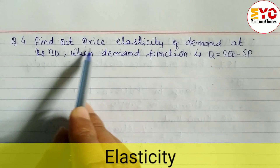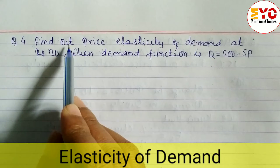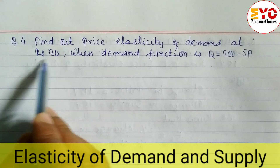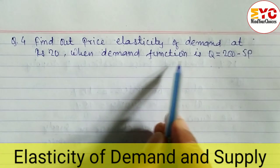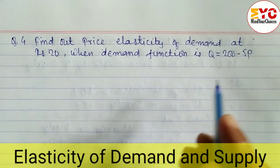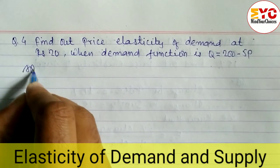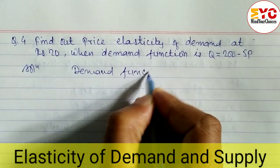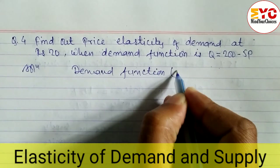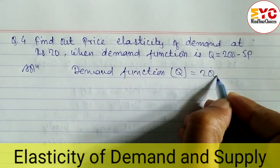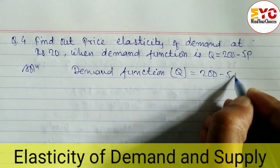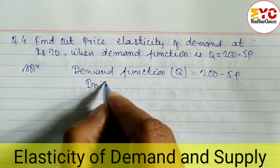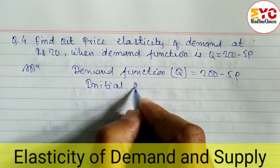We have a question: find out the price elasticity of demand. We have to find out the price elasticity of demand at rupees 20, so the initial price is given as 20 rupees. The demand function is also given. The demand function is denoted by q, so we write q is equal to 200 minus 5p.